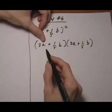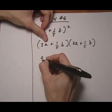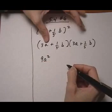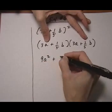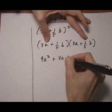So let's start with the 3a. 3a times 3a gives us 9a squared. 3a times 1 fifth b. Let's just write that one out for now.